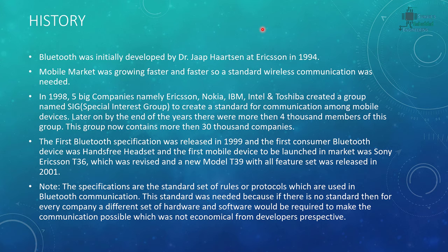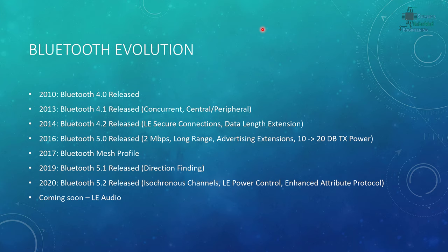In 2010, Bluetooth 4.0 was released. In 2013, 4.1 was released, which included concurrent central and peripheral roles — meaning a device can support both the master and slave roles simultaneously. In 2014, Bluetooth 4.2 was released, which added LE secure connections and data length extension. Bluetooth 5.0 was released in 2016, providing 2 Mbps speed, long-range advertising extension, and increased transmission power from 10 to 20 dB.